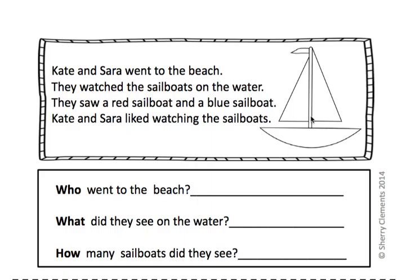Here is the story. Kate and Sarah went to the beach. They watched the sailboats on the water. They saw a red sailboat and a blue sailboat. Kate and Sarah liked watching the sailboats.